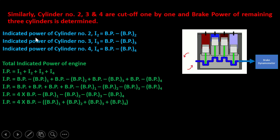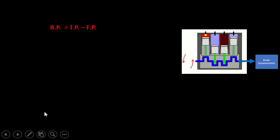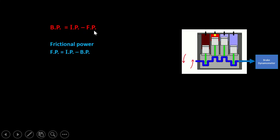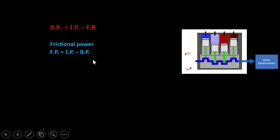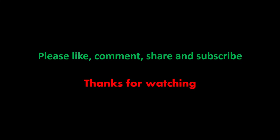We have calculated the indicated power of individual cylinders — cylinder 1, 2, 3, and 4 — and the total indicated power of the engine. For frictional power: since brake power equals indicated power minus frictional power, frictional power FP = IP − BP. So we have calculated both indicated power and frictional power. Hope you like this video — please like, comment, share, and subscribe. Thanks for watching, goodbye.